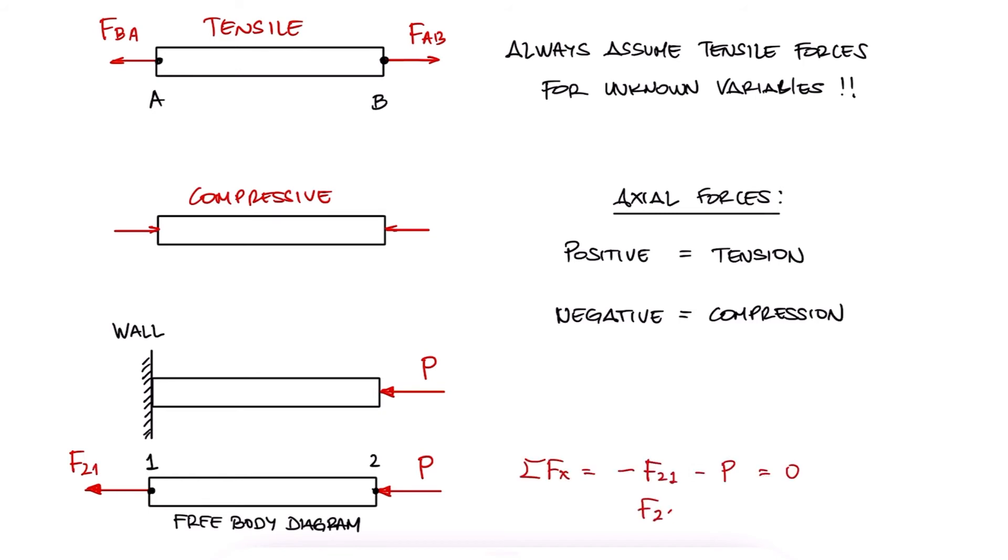like for example the reaction force at the wall of a cantilever beam that is being pushed towards the wall, we can draw it as a vector that is causing tension at the fixed end, and when solving for it, we will get a negative value.